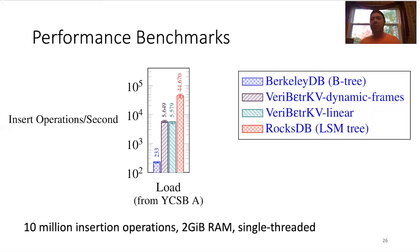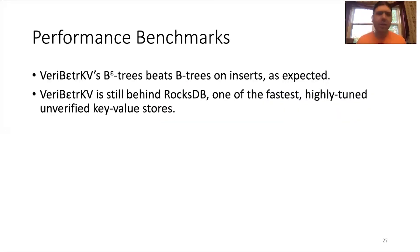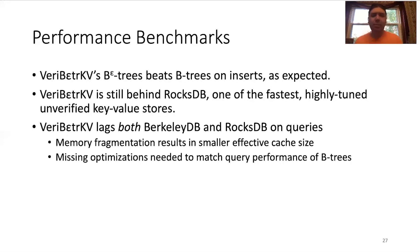However, we also compared to RocksDB, which uses an LSM tree. It's one of the fastest key-value stores out there. The LSM tree is another write optimized data structure. And so, we're still lagging behind them. So, the B-epsilon trees are pretty good on inserts as expected, but still not the best. We also lag behind both of them on queries for a few reasons. One is that memory fragmentation results in a smaller effective cache size than would be ideal. Secondly, there are some known optimizations that B-epsilon trees need that we currently haven't implemented yet.